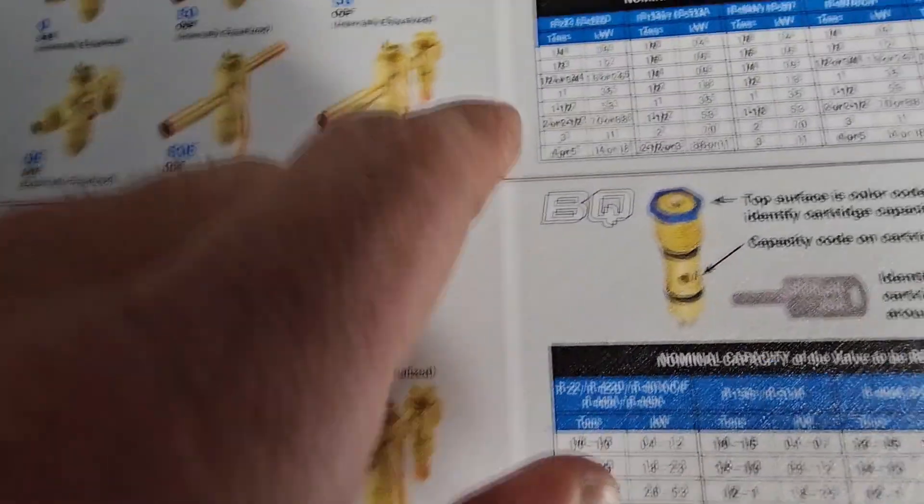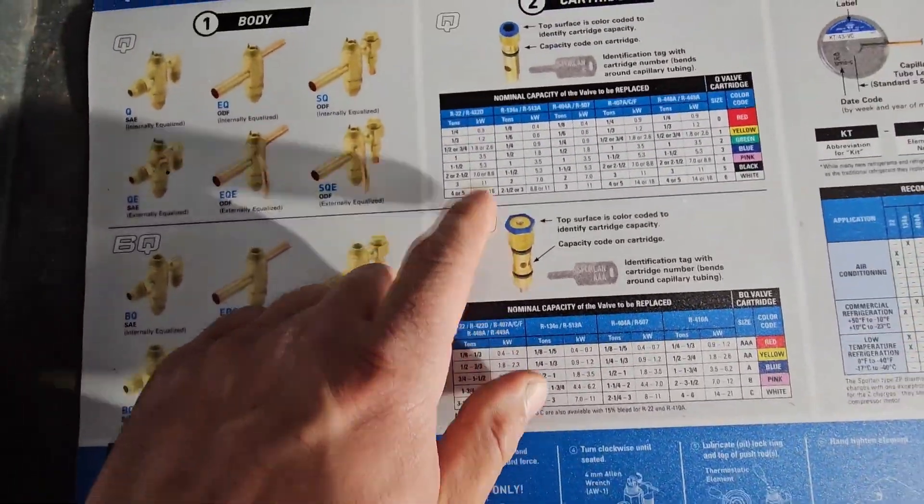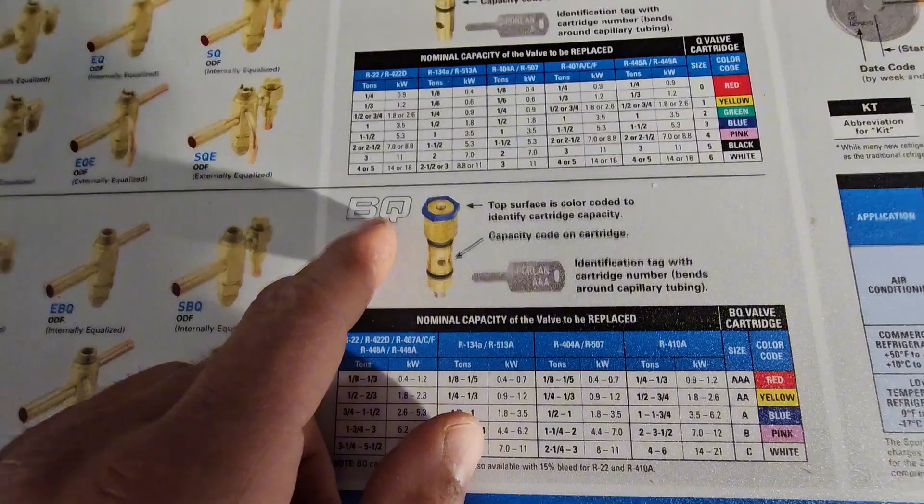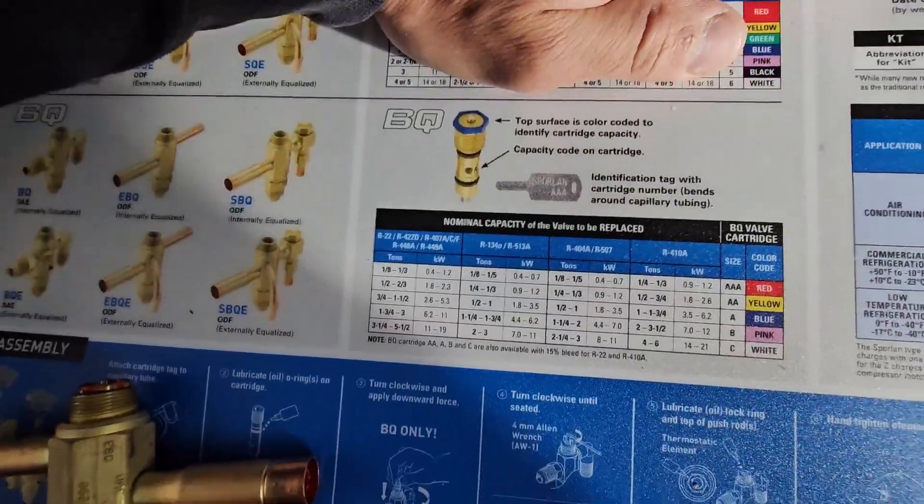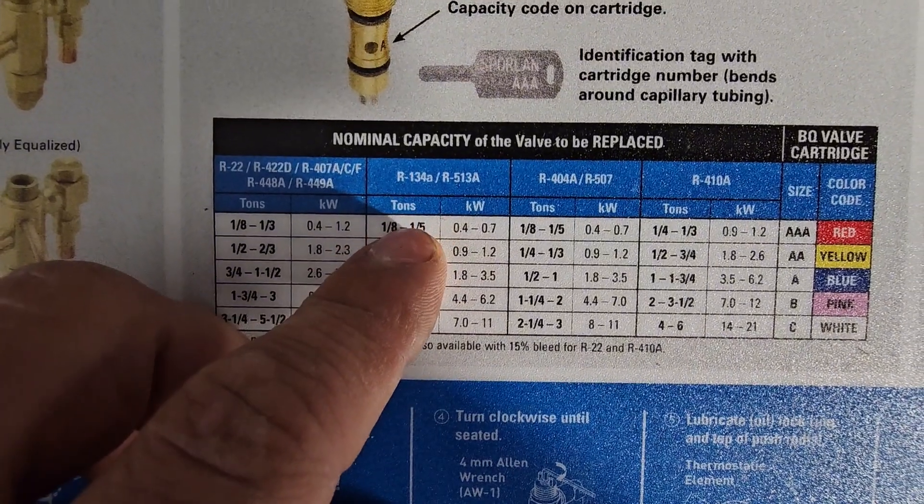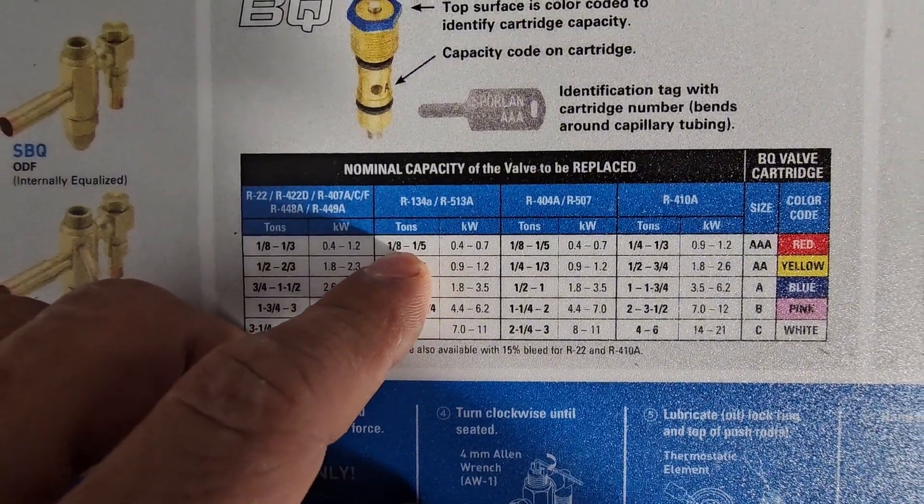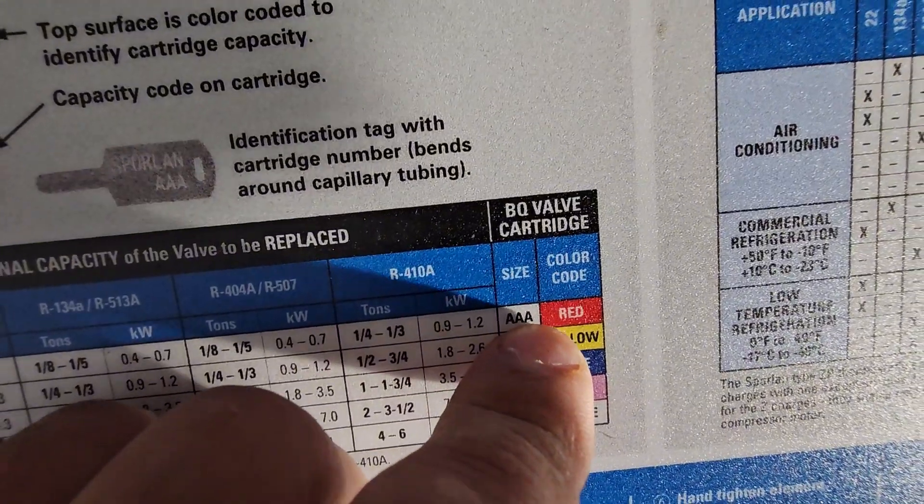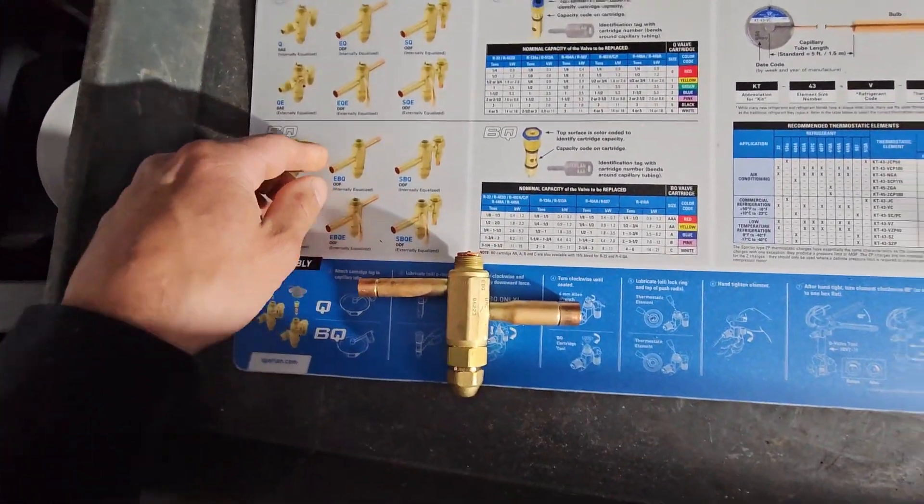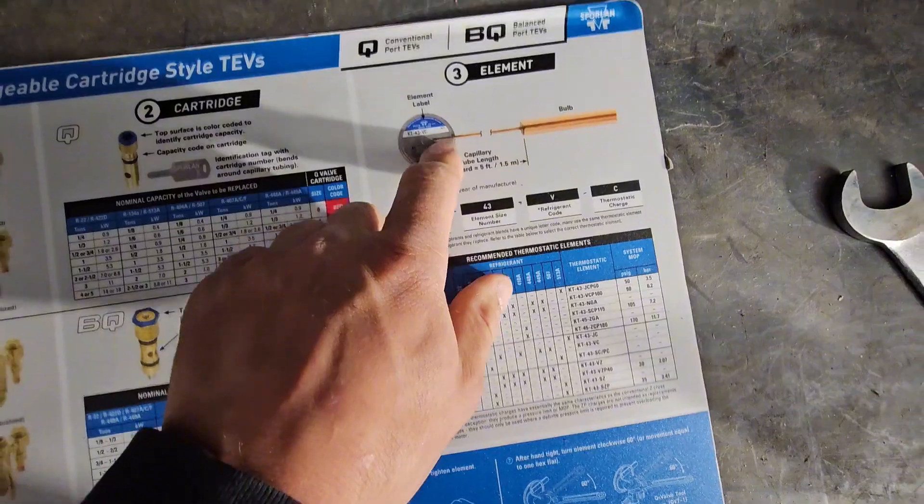I selected an EBQ. Second one is select your cartridge. I'm using a balanced port valve, which I don't want to go into that in this video, but this is for conventional valves. We have a balanced port valve. So basically we're going to be using 134a and we're going to be in the eighth to a fifth ton range, so we want to use a red cartridge, which is triple A, which is what this is. So we've selected our body style, selected our cartridge, now we just need a power element.